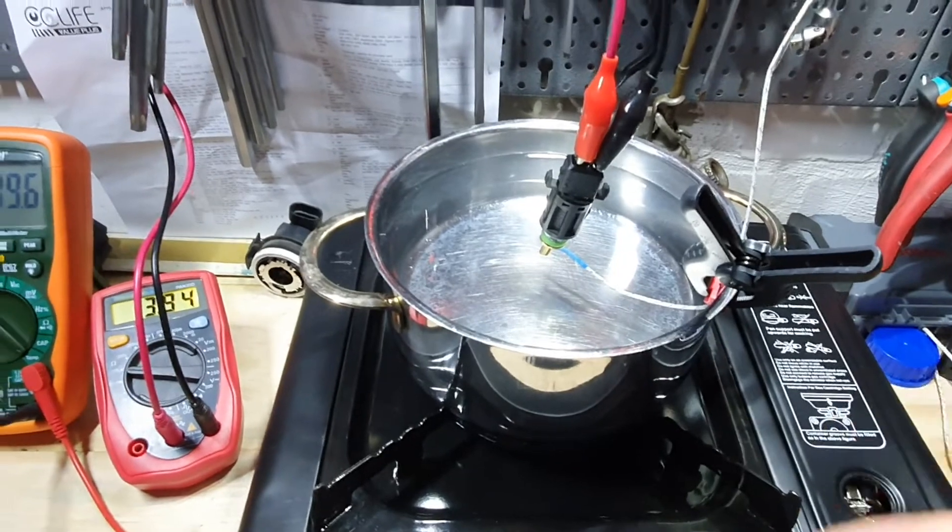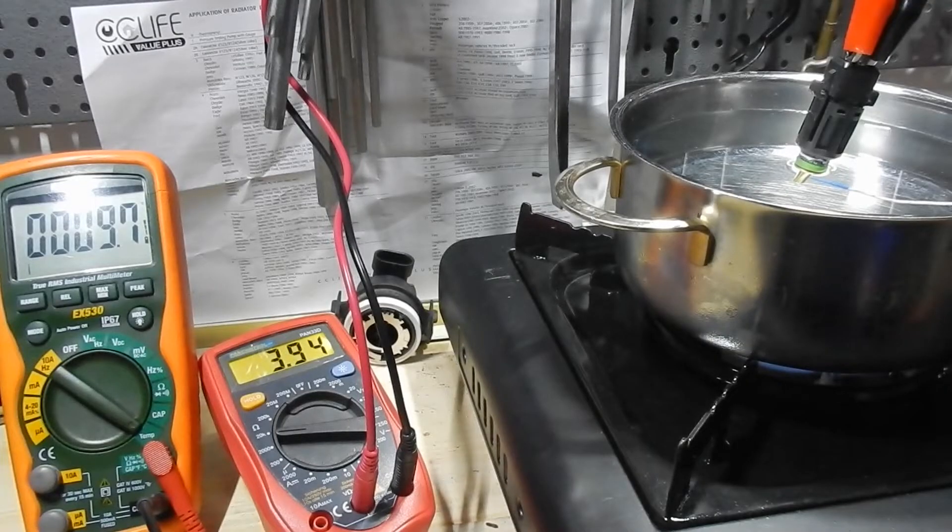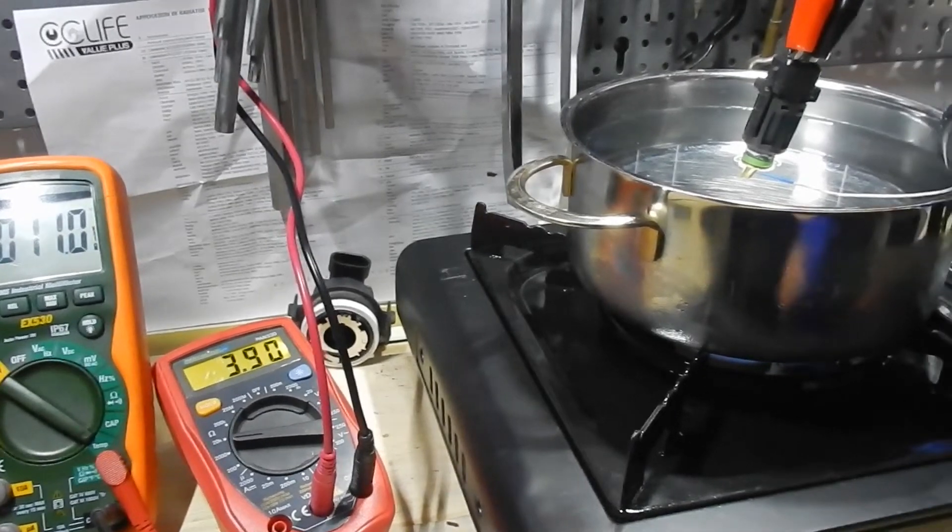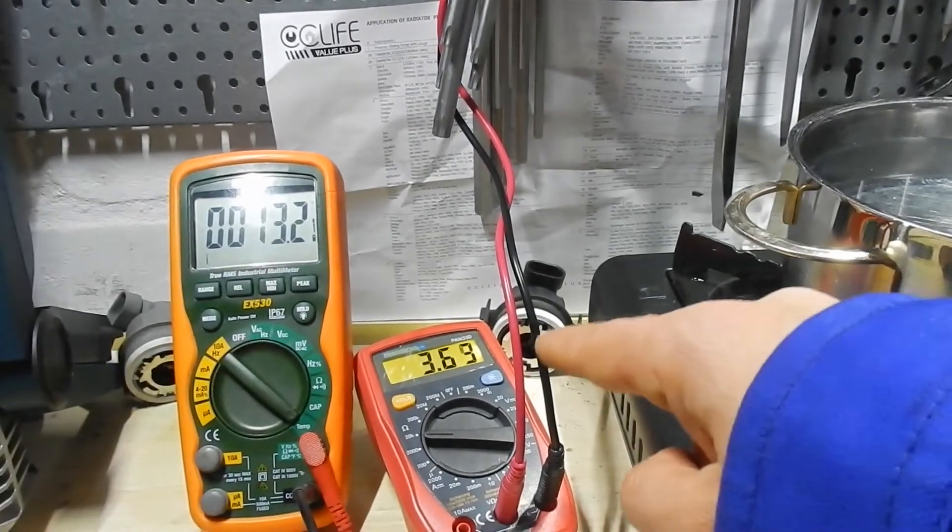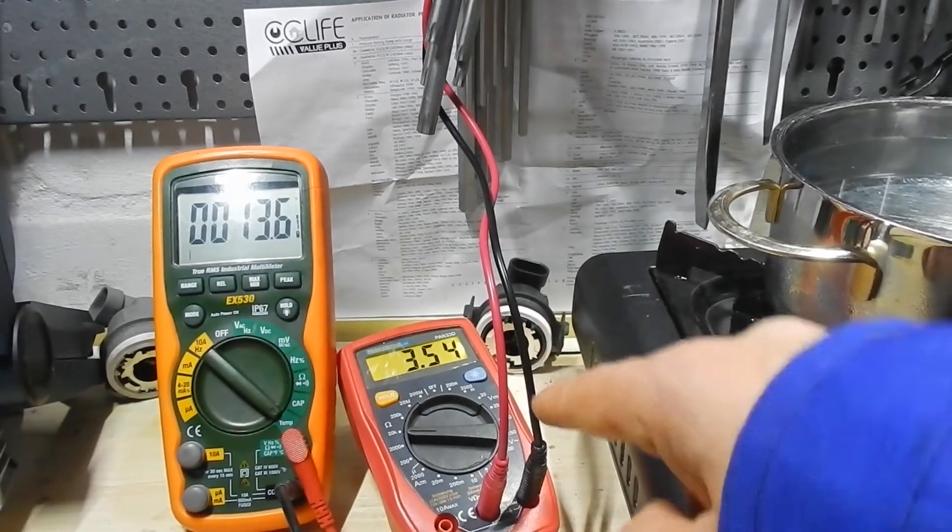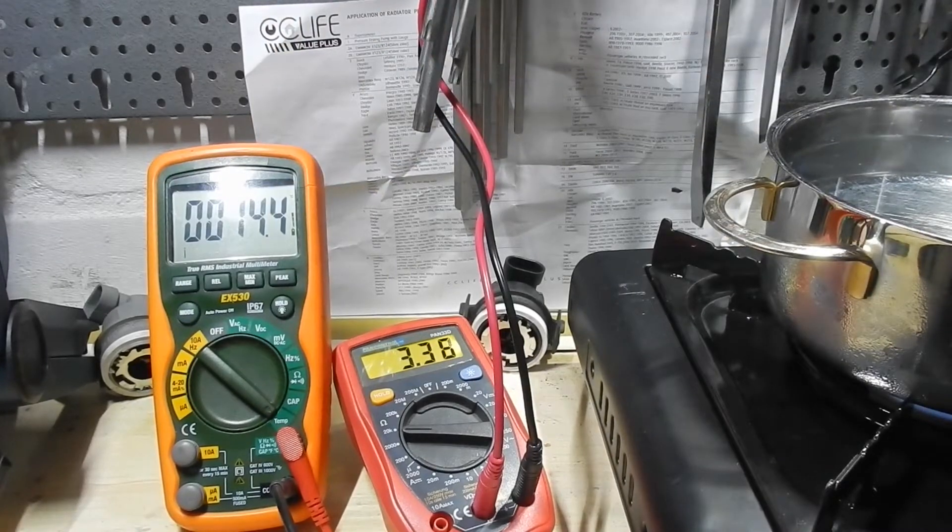This is my stove here. I will be heating up the water, and through this experiment the temperature of the water will be increasing and the resistance of the temperature sensor should decrease. Now let's start the experiment. I've already started heating up the water and the resistance is starting to decrease as the temperature is increasing. Here you can see clearly.